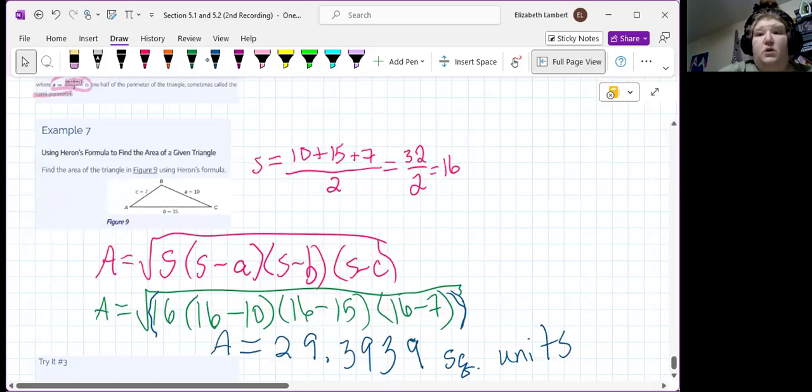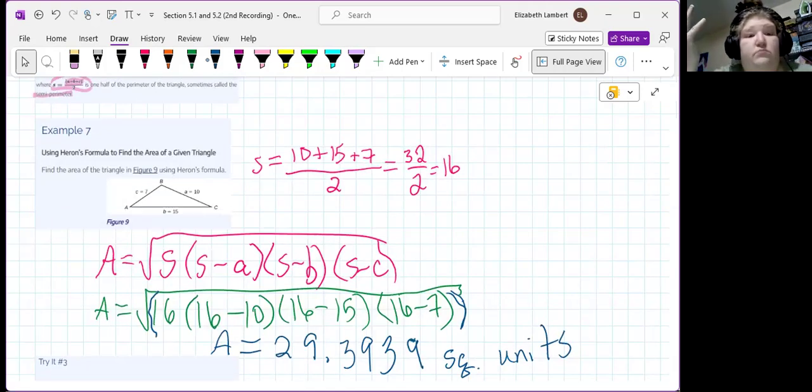So, we found the semi-perimeter, got our formula, put the numbers in the spots, bam. So, with the big side of 15, the area comes out to be a little less than 30.